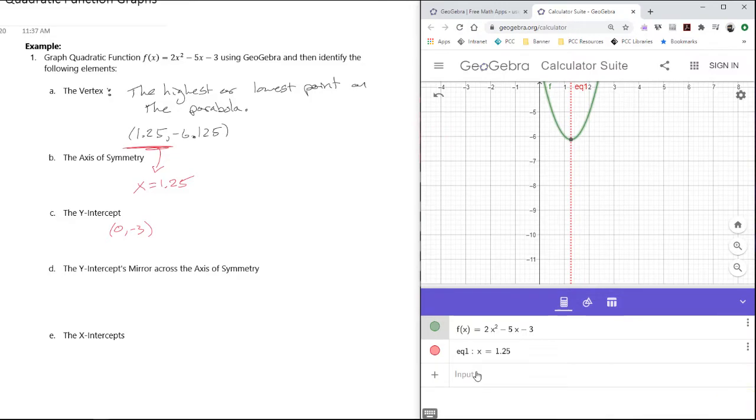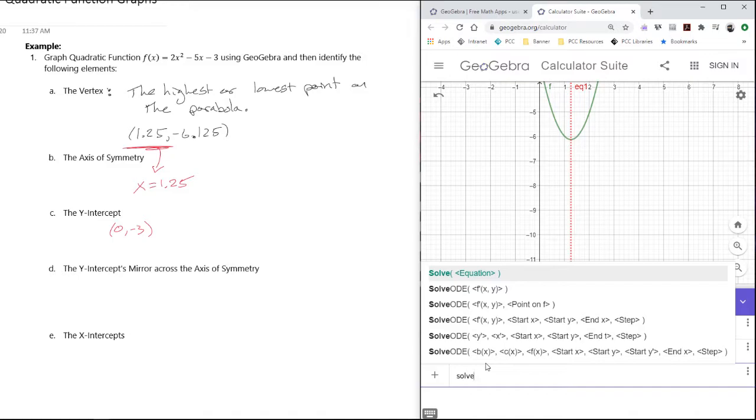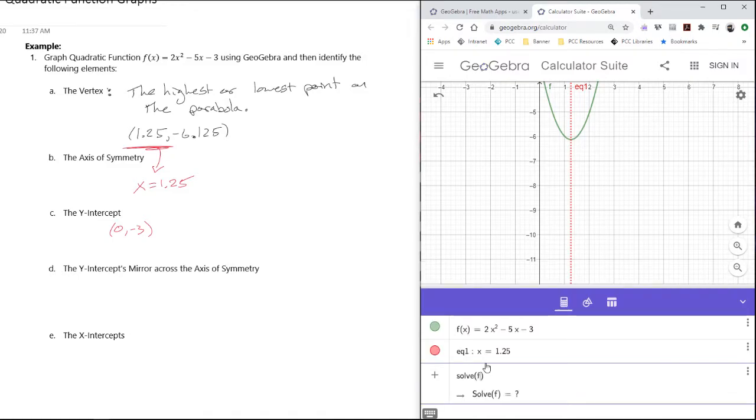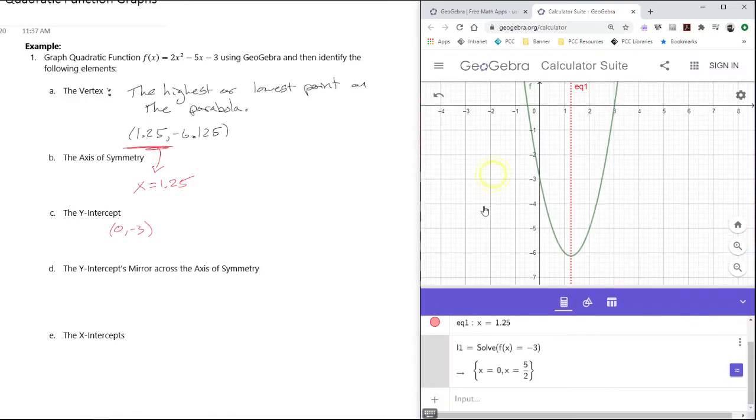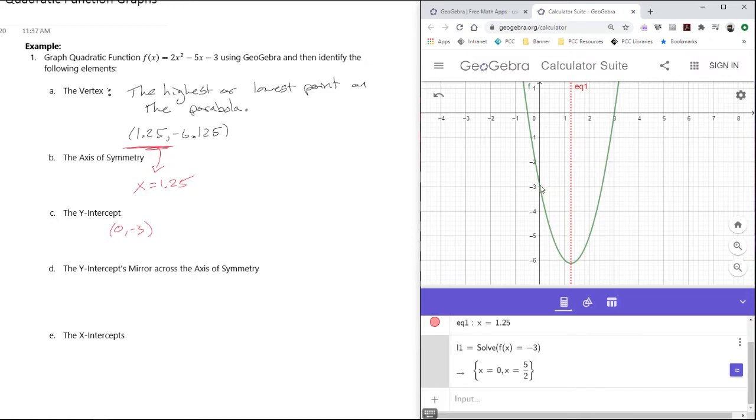So I might say solve f(x) = -3. The reason I'm saying -3 is because that's the y-value of the y-intercept. I could draw the point right here if I was on paper and I could just draw that dot, but I need to know the x-value.